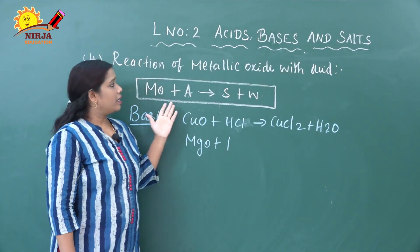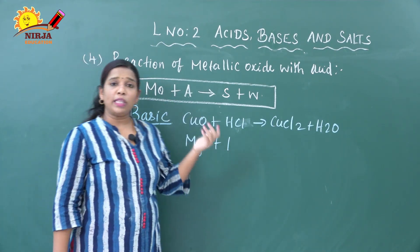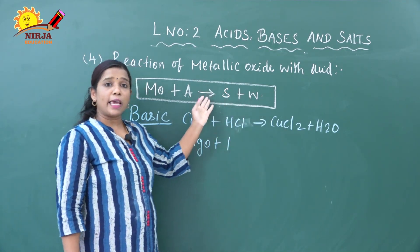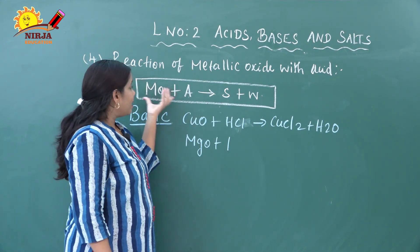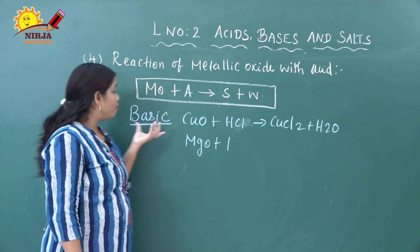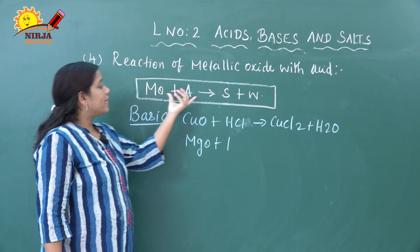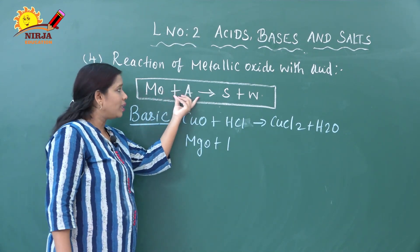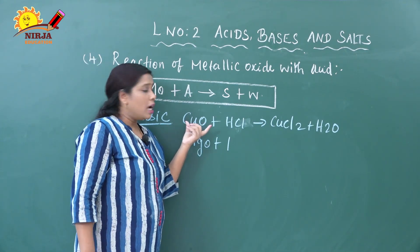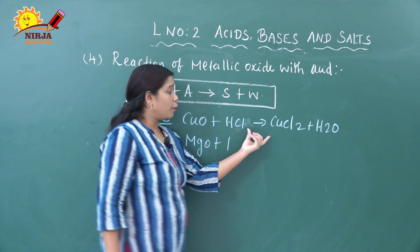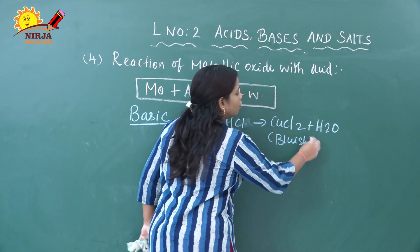Next is the reaction of metallic oxide — this is the last reaction of acid. The metallic oxide reacts with acid to produce salt and water, which are the same byproducts as neutralization. Here the metallic oxide has the character of a base, so it reacts with acid. For example, copper oxide reacts with hydrochloric acid to produce copper chloride — a bluish-green color solution.